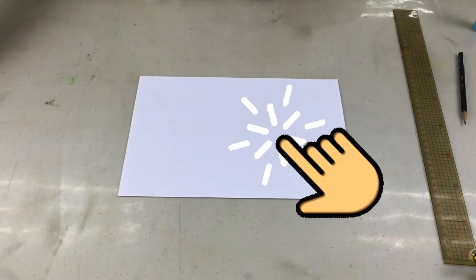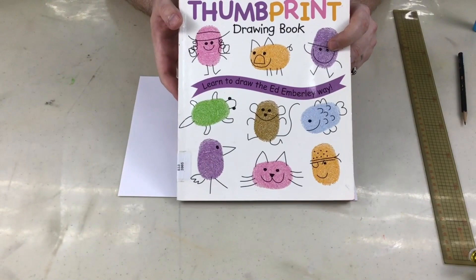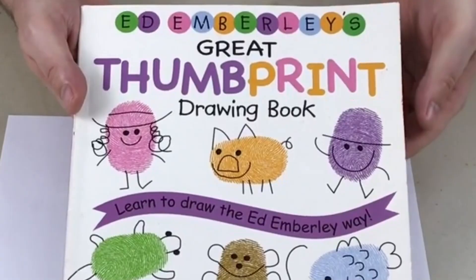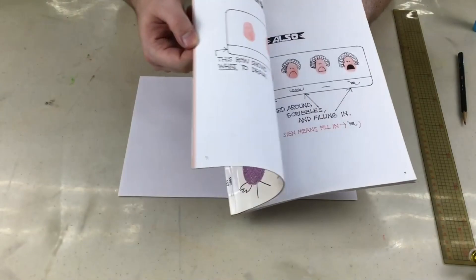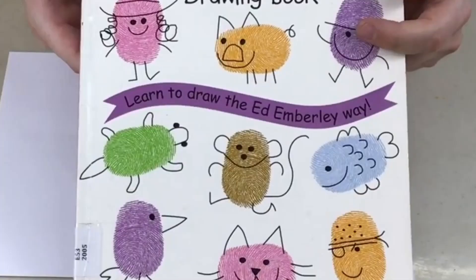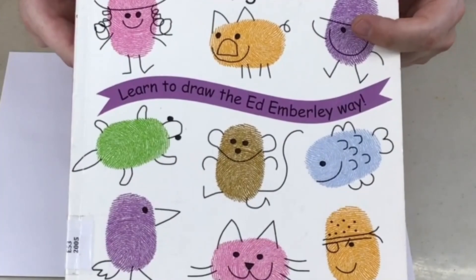I have two books in the art library. I have this one. This is by Ed Emberly. It's called The Great Thumbprint Drawing Book. You might have seen this one in the art library. I'm going to take some photos of some pages from this book because I think the book is really good.